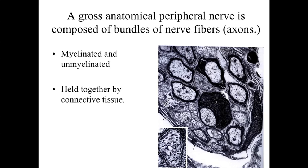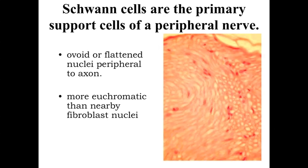These nerve fibers or nerve axons may be myelinated or unmyelinated — we'll talk about what myelin is in the next mini lecture — but it is essentially a wrapping around these axons to help transmit signals within the body. In general, the peripheral nerves outside of the myelin sheath, the myelin protective coating, are going to be held together by connective tissue as a coherent structure within the body.